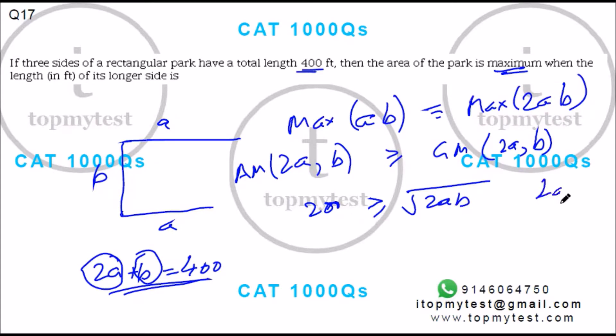When will the equality come in? When 2a is equal to B. Equality will happen when 2a is equal to B. So if I plug in 2a is equal to B, you'll get...